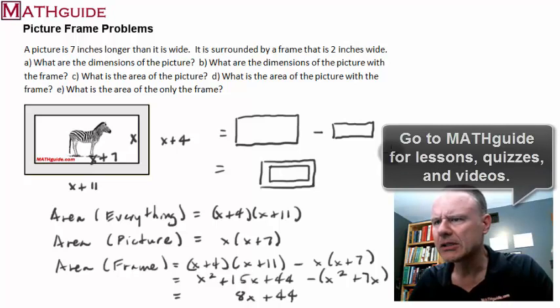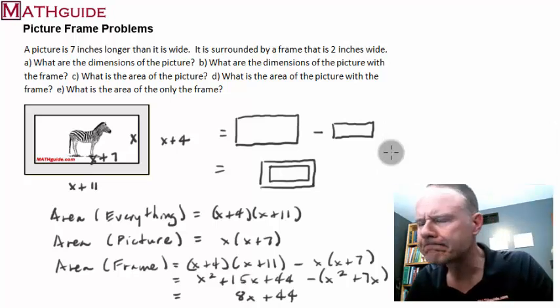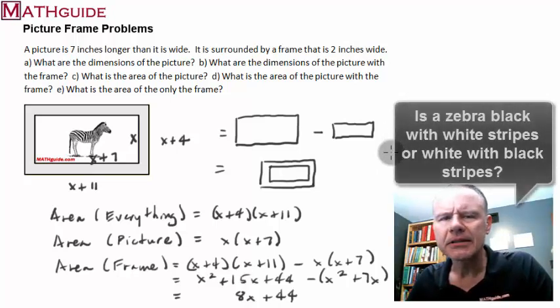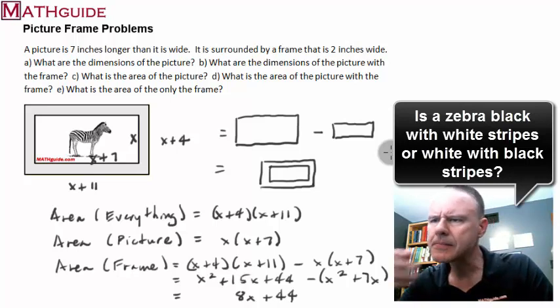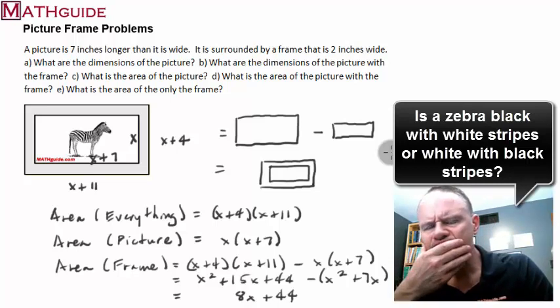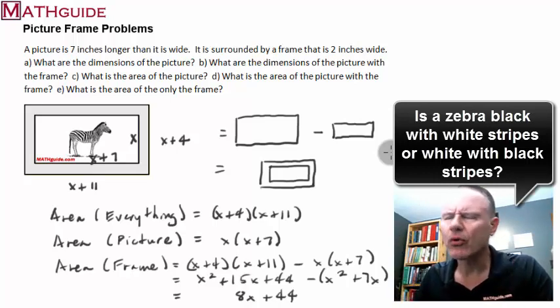Hmm. It's a zebra. Is a zebra black with white stripes or is it white with black stripes? It's one for the philosophers.